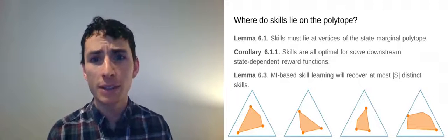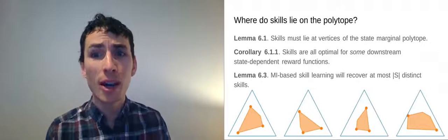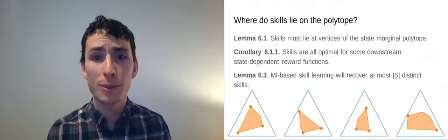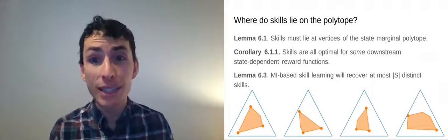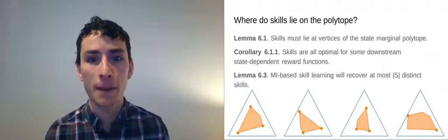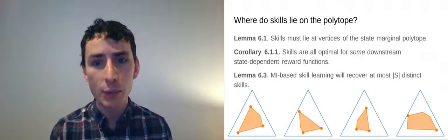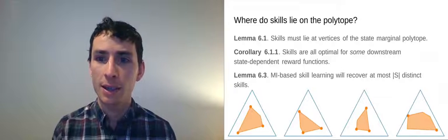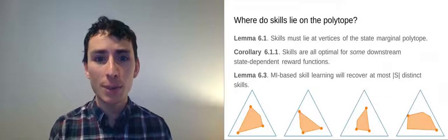These results are pretty negative. The skills learned by mutual information are not necessarily sufficient for solving downstream tasks, even if we could take linear combinations of these skills. But what if we use skills in a different way to solve downstream tasks? Our next result will look at how the skills can be used for fine-tuning.